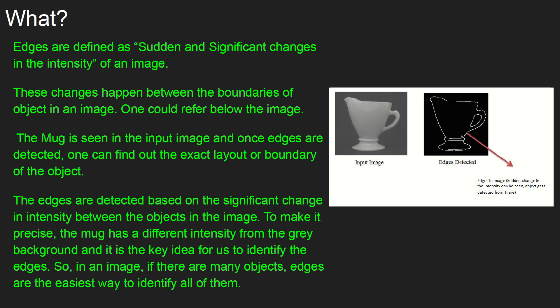Before that it is important for us to understand what an edge is. Edges are nothing but sudden and significant changes in the intensity of an image — the changes that happen between the boundaries of an object in an image. You can see that there is an input image and the edges of this mug are all detected.